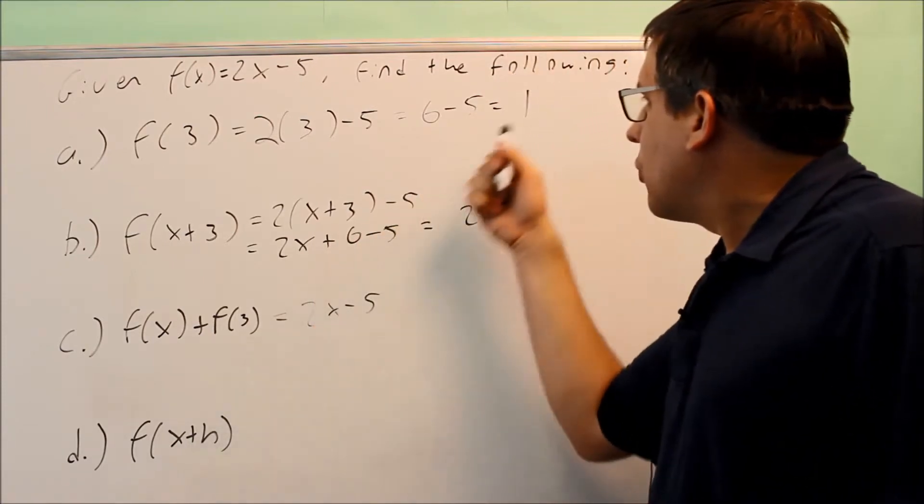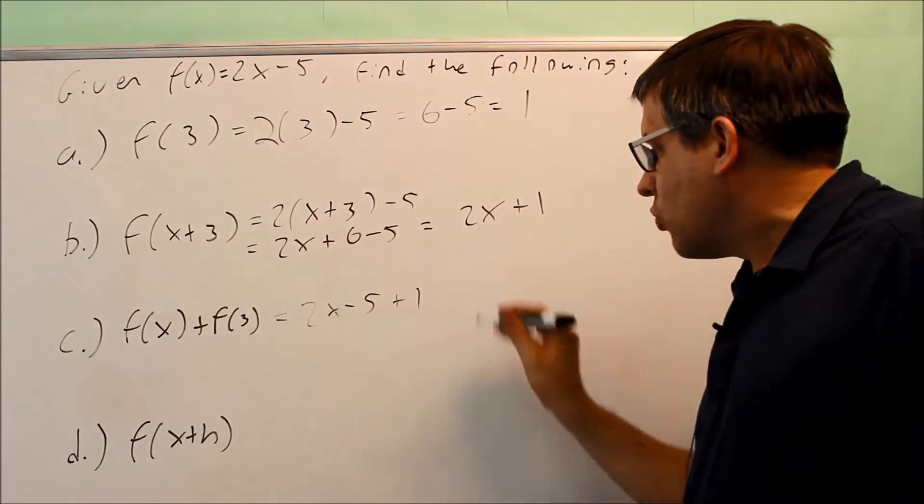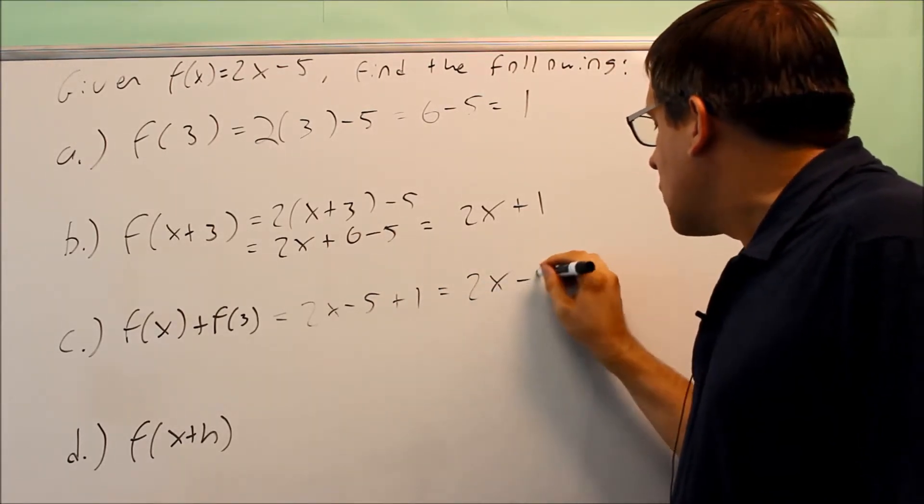and f(3) is going to be 1. So I have 2x - 5 + 1, and we're going to simplify this, and you get 2x - 4.